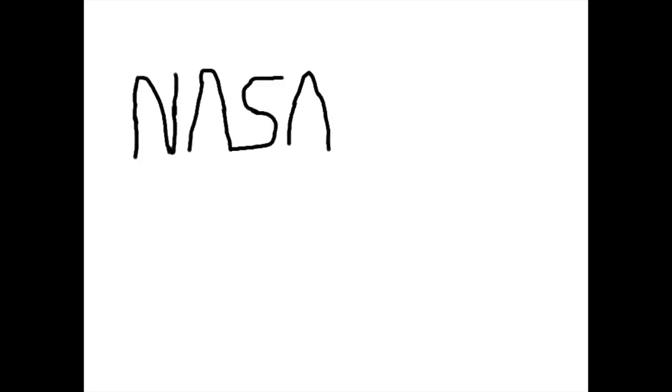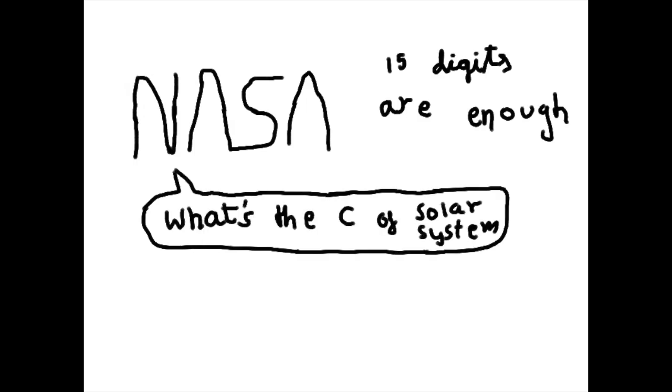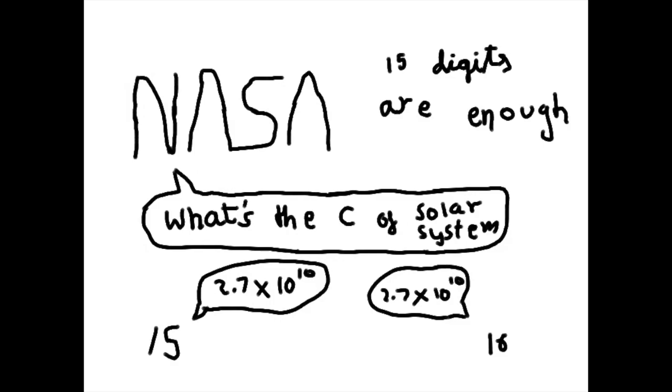NASA claims to use only 15 digits of pi which seems fair. If you have a circle with the radius of the solar system and you calculate its circumference using 15 digits of pi and 16 digits of pi, you get a difference of a few millimeters. That is indeed insignificant.